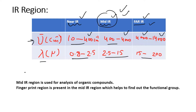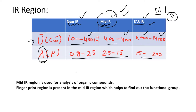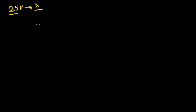The IR spectrum is plotted as wavenumber versus percentage transmittance. The reason we express wavelength in terms of wavenumber is that when we do calculations — for example, if wavelength is 2.5 microns — converting to wavenumber gives a cleaner scale, since wavenumber is the inverse of wavelength.